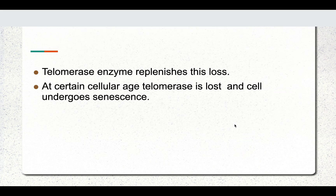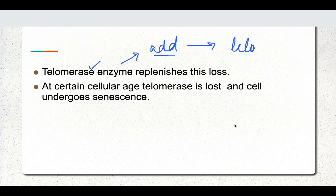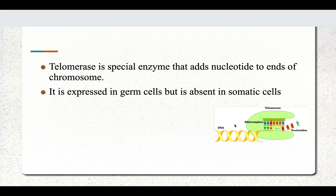There is an enzyme known as telomerase. The telomerase enzyme replenishes the loss — it adds nucleotides to the chromosome and restores the length of the telomere. After a certain age or after certain rounds of multiplication, telomerase is lost and the cell will undergo senescence. Telomerase adds nucleotides to the ends of the chromosome and is expressed in germ cells because germ cells require multiple doublings, unlike somatic cells.